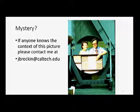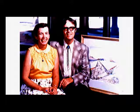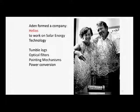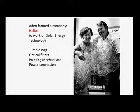They did a lot to promote solar energy — they wrote papers and traveled the world giving them at international conferences. Marjorie became a temporary U.S. ambassador to energy relations in Saudi Arabia. They even formed a company called Helios to work on solar energy. One of the things he did was invent something called tumble logs — tumbleweed crushed into a log. They manufactured them for a while, but discovered the heat capacity of crushed tumble logs isn't very good — sawdust is far better. So they went out of that business. He also made optical filters for pointing mechanisms and power conversion technology.